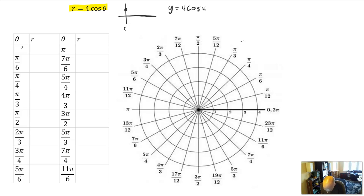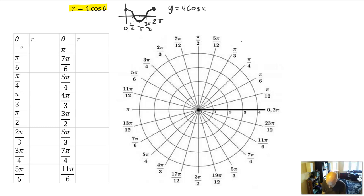y equals 4 cosine x starts at 0, ends at 2 pi, has a minimum value at pi, with changes happening at pi over 2 and 3 pi over 2. It's important to notice that cosine starts at its highest value, travels through 0, then its lowest value, then back through 0, and back to its highest value. Those are going to be the most important values.